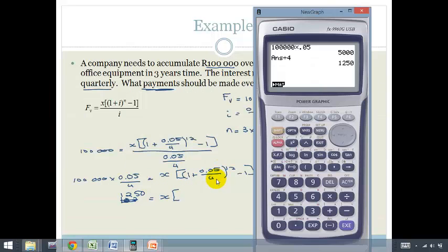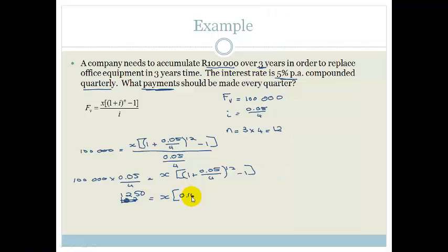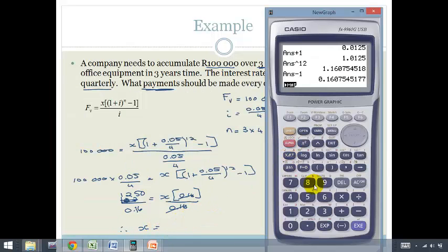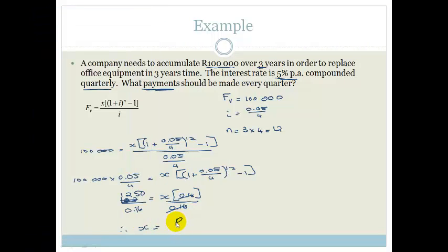So, we've got 0.05 divided by 4, then we add 1, then we take it all to the power of 12, and we subtract 1. And we end up with 0.16. So, to get X, we're going to divide both sides by 0.16. Therefore, your X is going to equal 1,250 divided by 0.16, and we end up with 7,812.50, which is quite a big amount of money to be paying per quarter. But we are trying to get up to 100,000 Rand in three years with just 5% per annum compounded quarterly.